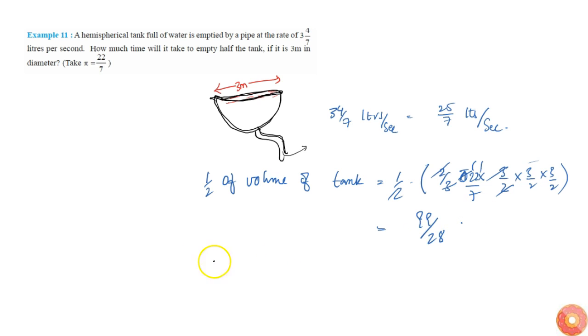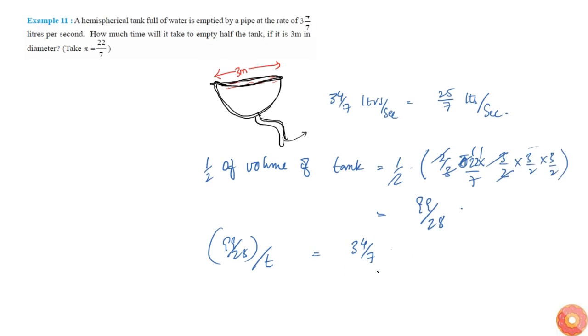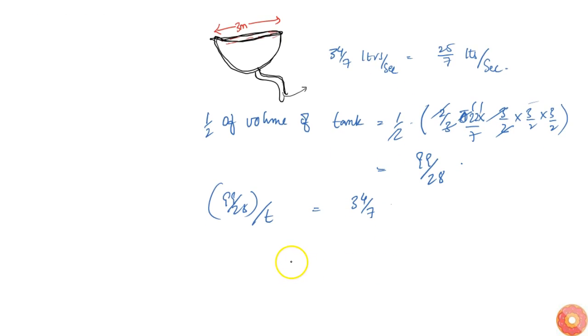Now this 99/28 volume by time t is given as 34/7. Or otherwise I can tell it in other way: let's say it takes t time to empty.